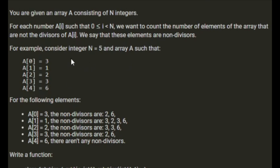For example, consider integer N equals 5, an array A such that the array is [3, 1, 2, 3, 6]. For the following elements: A[0] is 3, and the non-divisors are 2 and 6. So 3 can divide into 1 and 3, but not 2 and 6. A[1] is 1, and the non-divisors are 3, 2, 3 and 6. 1 won't divide into any of those. A[2] is 2, and the non-divisors are 3, 3 and 6. A[3] is 3, the non-divisors are 2 and 6. And A[4] is 6, there aren't any non-divisors.